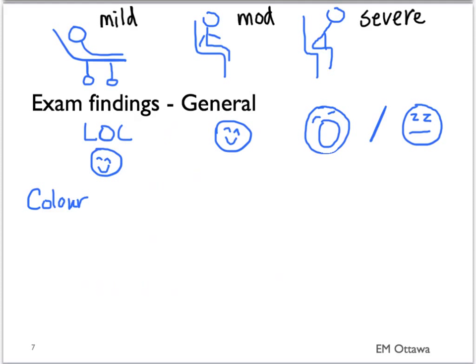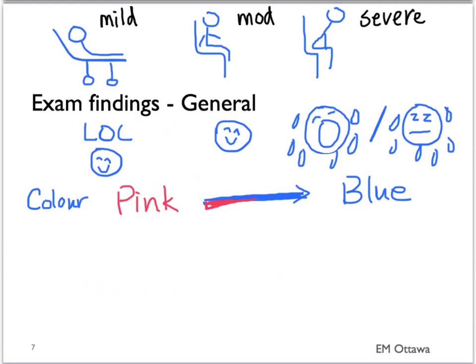We next look at color. Patients with mild exacerbation will not be cyanotic, whereas patients who have severe exacerbation will be cyanotic. Patients with severe exacerbation will also be diaphoretic.